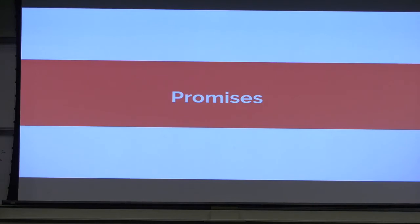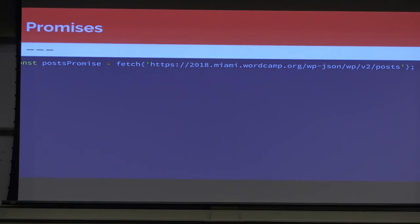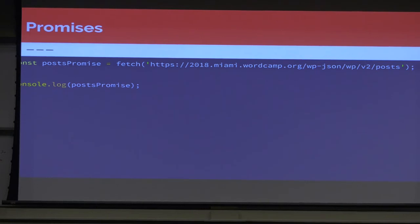The next topic is promises. We have a post promise and we're just fetching. Fetch is very similar to $.getJSON or $.ajax, but it's built into the browser itself — you don't have to have any type of library. We're going to fetch the JSON API of WordCamp Miami and console.log that. But what we're going to get is a promise that's still pending, and the value is still undefined.